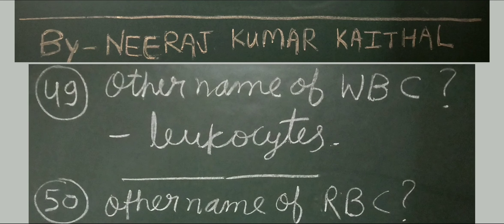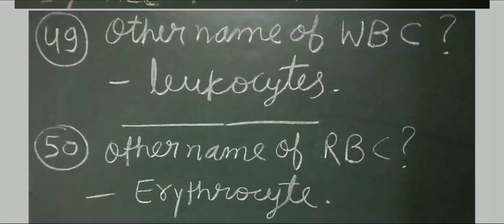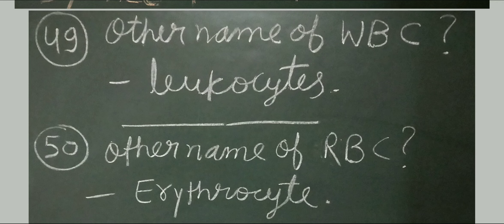Last question: what is the other name of RBC? Erythrocyte. Red blood corpuscles are also known as erythrocytes. Thank you so much friends for watching this complete video. If you find this video helpful, please click the like button, share with your friends, and subscribe to our YouTube channel for nurses preparation. Download the PDF from our Telegram channel. Anatomy and physiology 50 important questions parts 1 and 2 are also available in the description box.